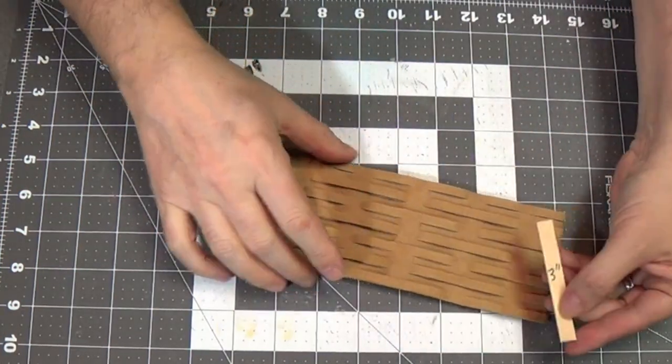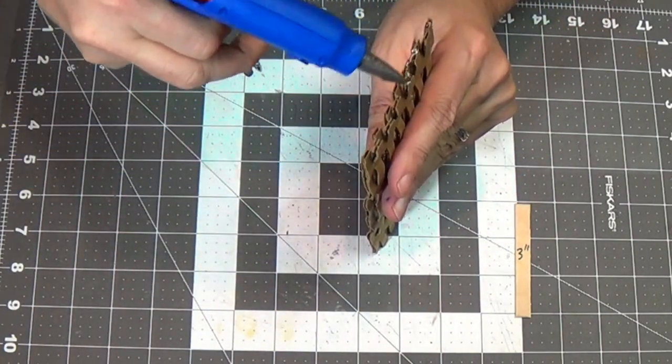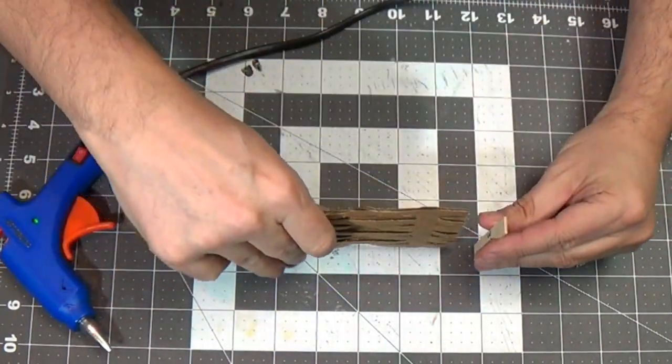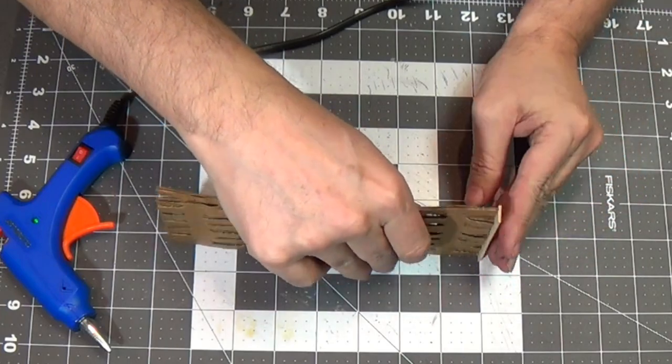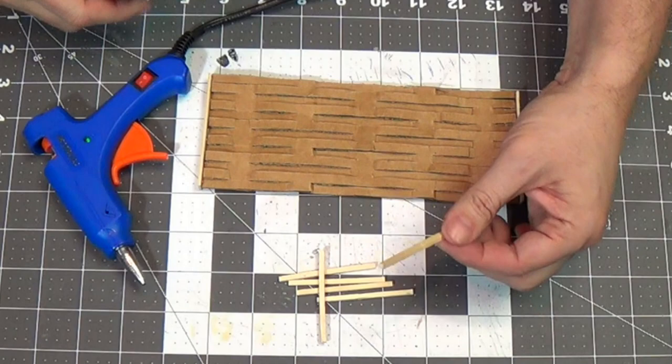Now you can see it's really flimsy. So I'm going to use popsicle sticks on the edge here. They're three inches long, of course, and I'll just hot glue that on the end. And this will help give it some strength because this thing is just really flimsy. So I'll put it on the other side.